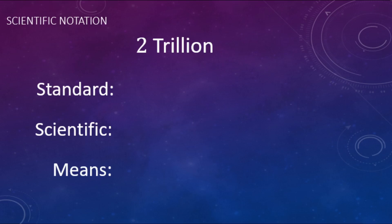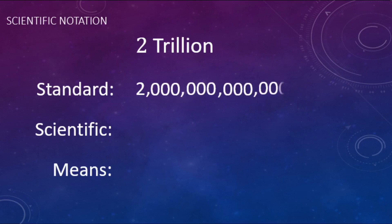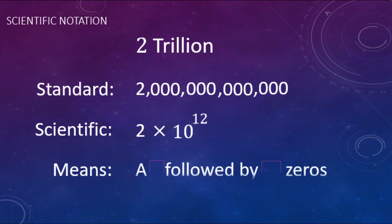Let's look at an example: two trillion. Writing it out regularly, we would have a two and then twelve zeros behind it. When we write this in scientific notation it's going to be two times 10 to the 12th power. So when we see two times 10 to the 12th power, this means we have a two followed by 12 zeros, which is what we see in standard form.